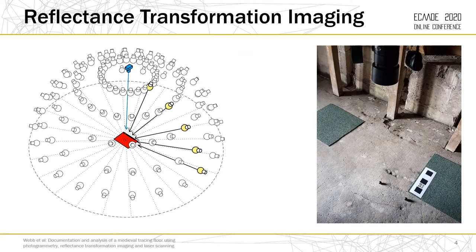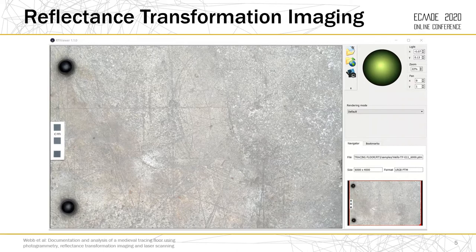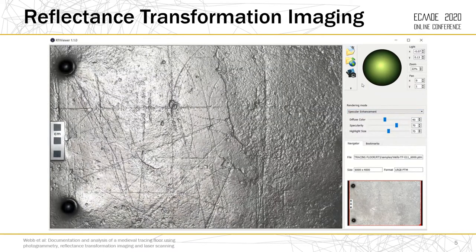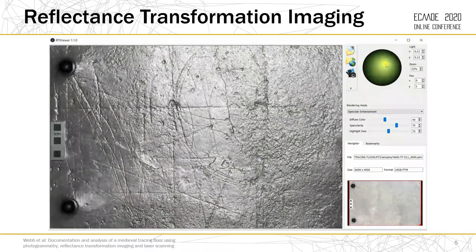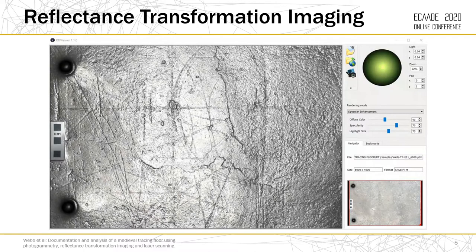The second method we tested was reflectance transformation imaging. Here a small area of the tracing floor is selected to study in detail — visible in the red area on the left hand diagram and also in the photo to the right. We add reflective spheres to the scene to allow the RTI Builder software to calculate shadows and reflectance. A camera is positioned looking vertically down at the target area shown in blue, and a flash gun is placed at multiple positions at the same distance from the target, highlighted in yellow and white on the diagram. The photographs taken of an identical area but with different lighting angles are processed using RTI Builder. The result is a surface we can view in different ways — for example, specular enhancement gives the floor a shiny, wet appearance where we can manipulate the light source to better visualise lines and arcs that can be difficult to see by eye.